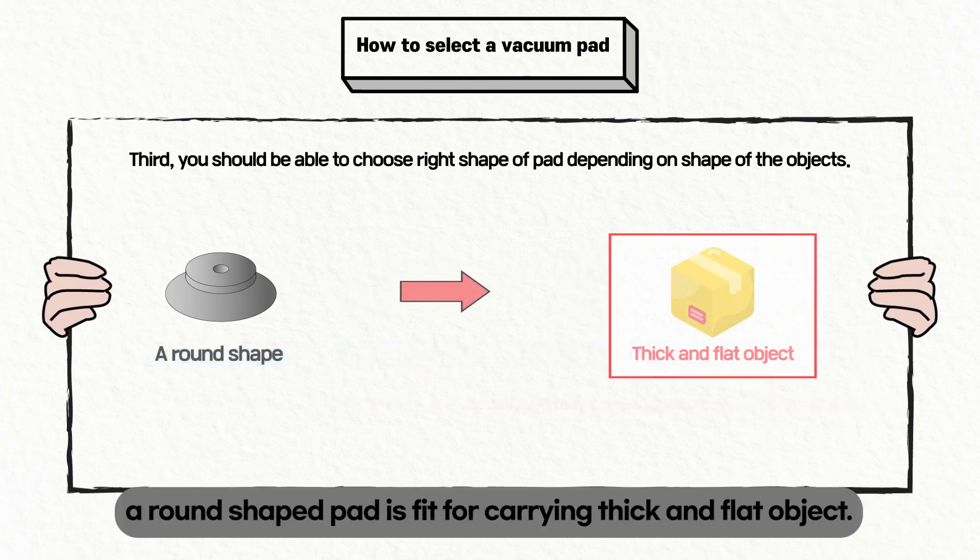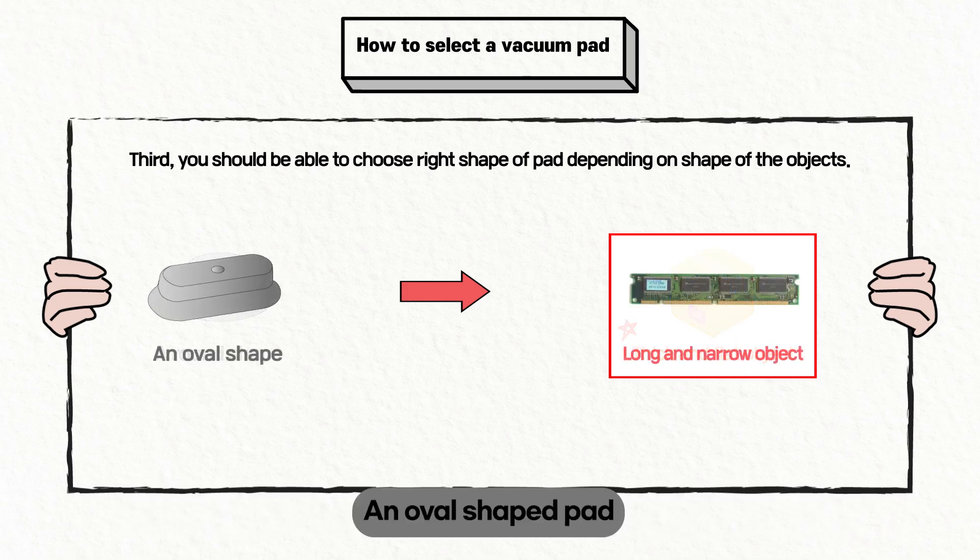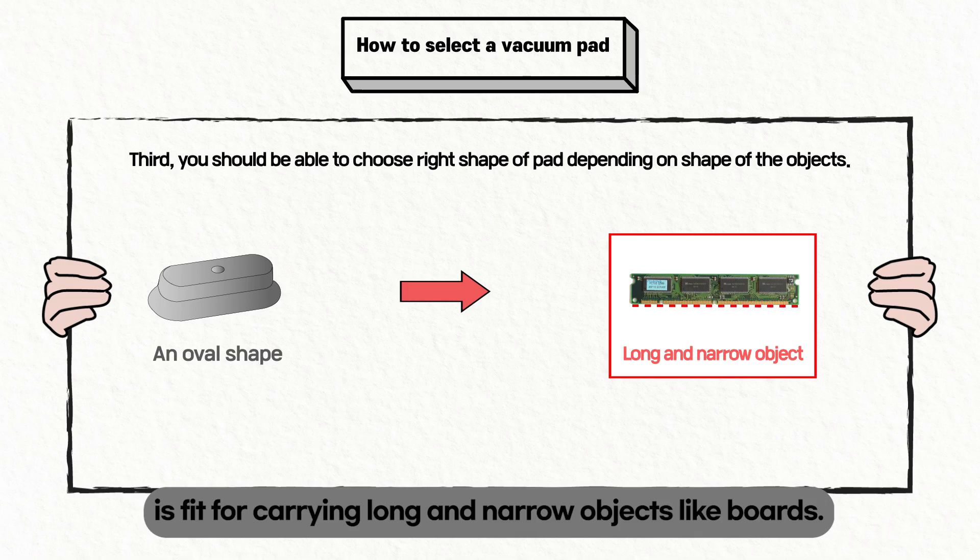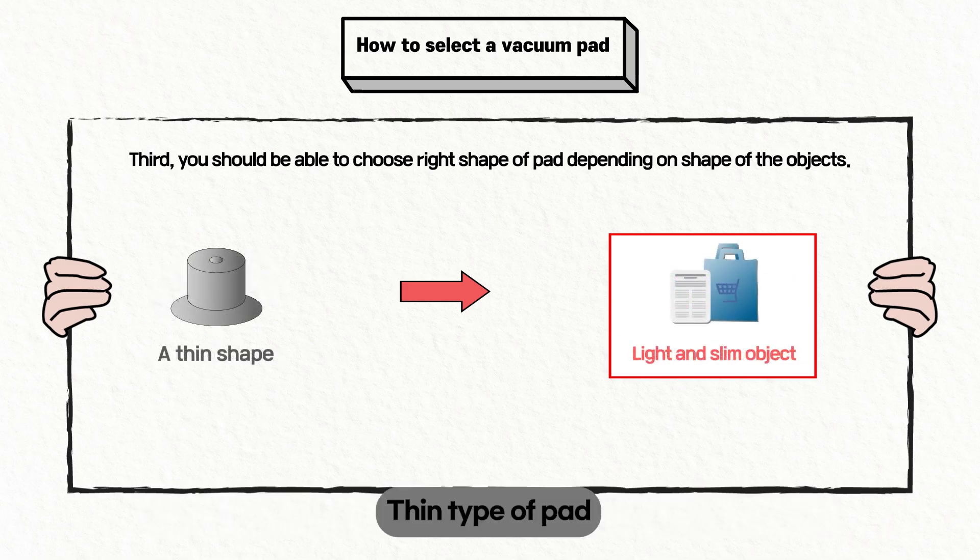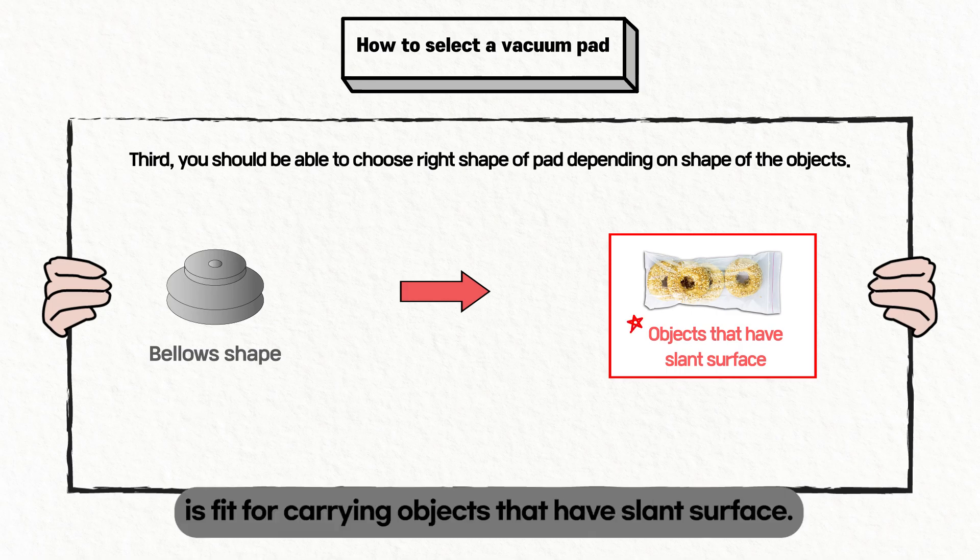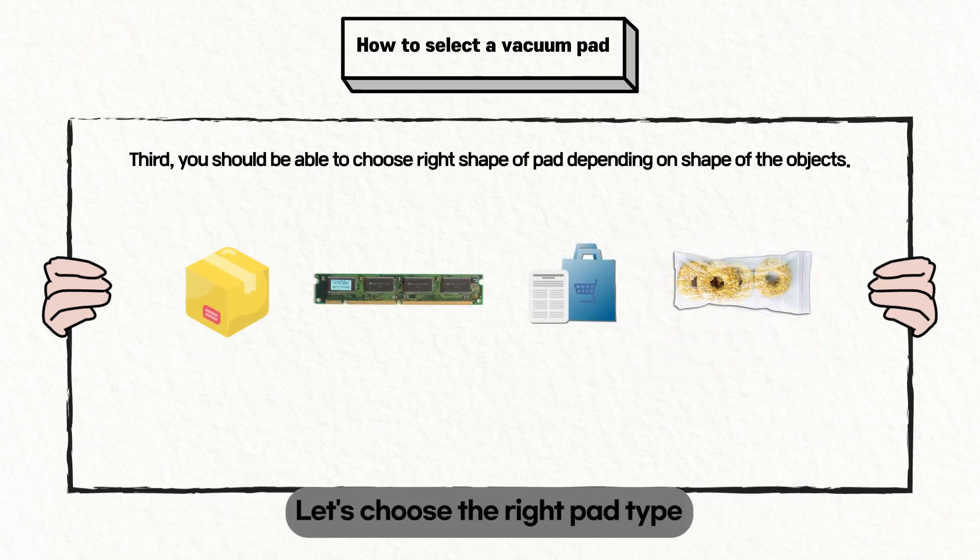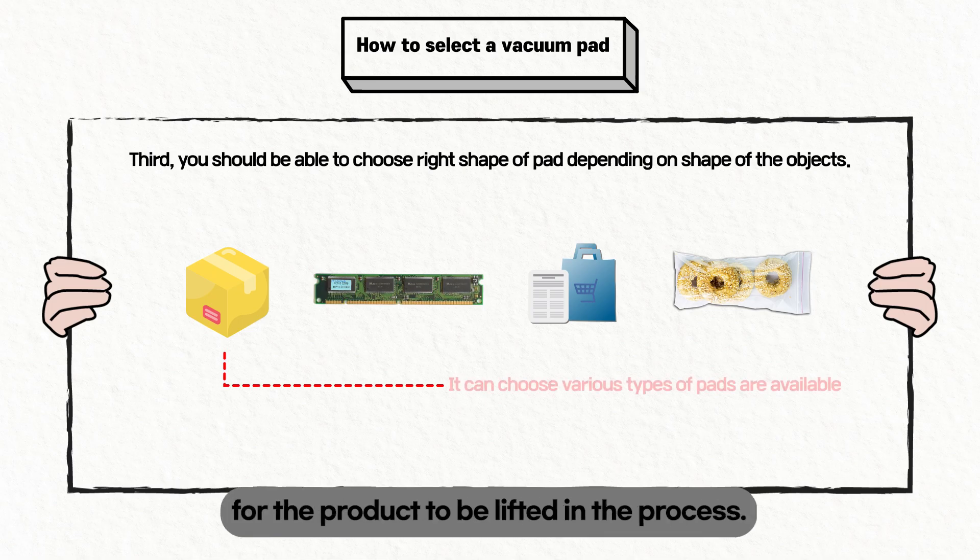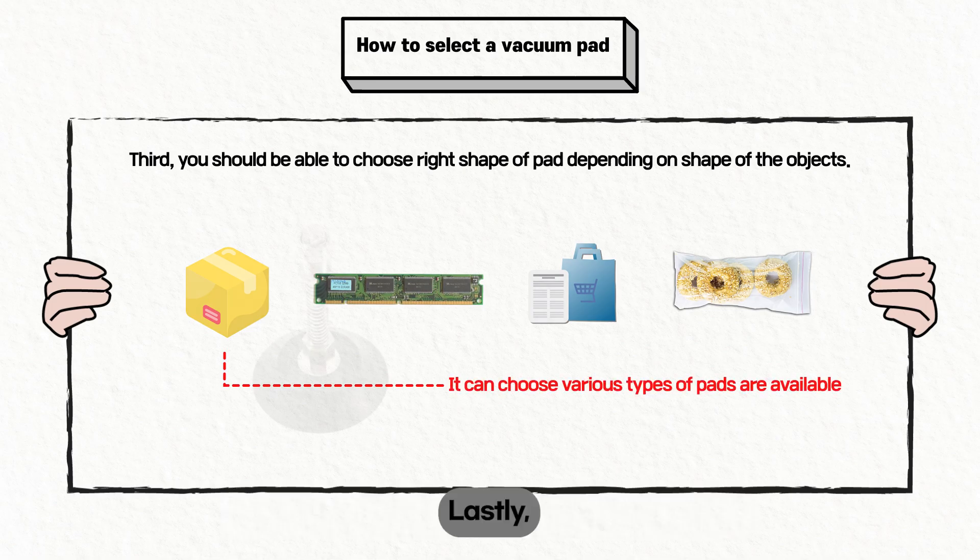For instance, a round shape pad is fit for carrying thick and flat objects. An oval-shaped pad is fit for carrying long and narrow objects, like boards. Thin type pads are fit for light and slim objects such as paper and vinyl. Bellows type pads are fit for carrying objects that have slanted surfaces. Let's choose the right pad type for the product to be lifted in the process.